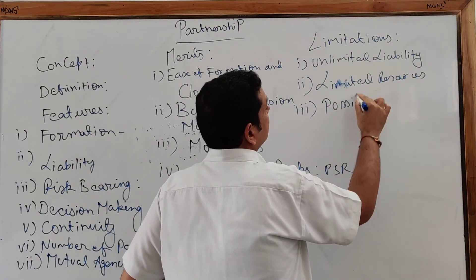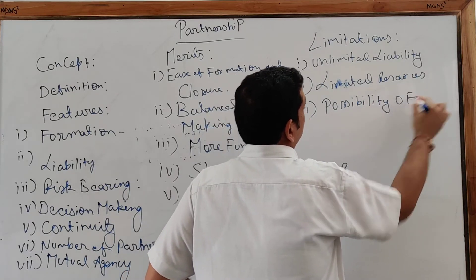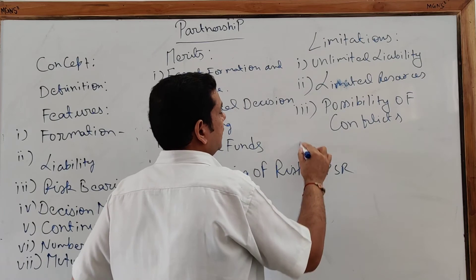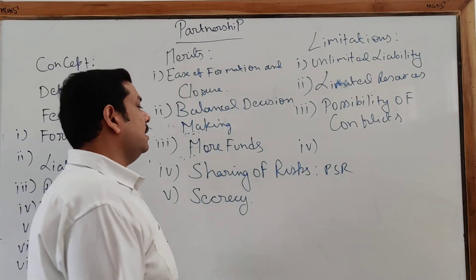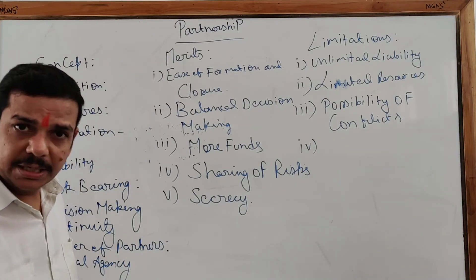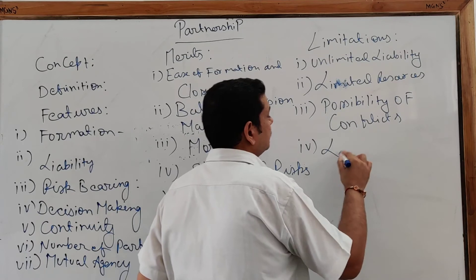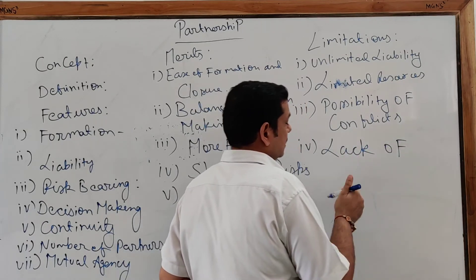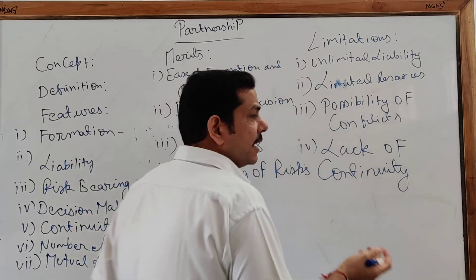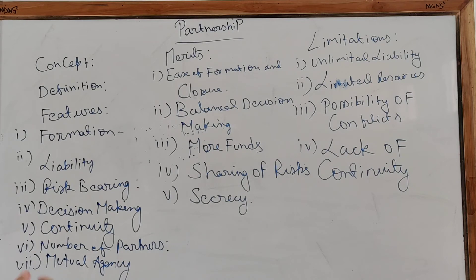Limitation — Possibility of Conflicts: When more persons with different mindsets join the firm, there is a possibility of conflicts among partners. Limitation — Lack of Continuity: This is also a major factor. Whenever any partner dies, retires, becomes insane, or it becomes impossible to continue with them, the partnership firm may come to an end. However, if they wish, they can continue with the remaining partners and capital.